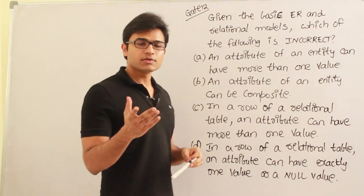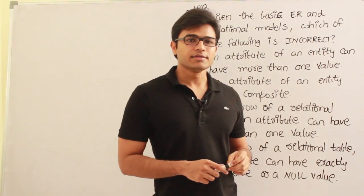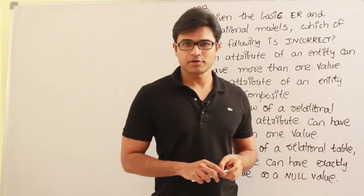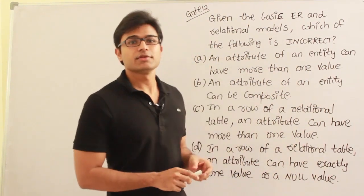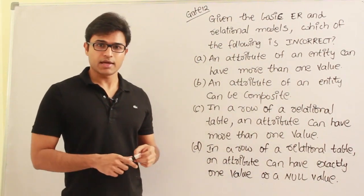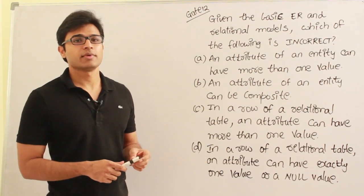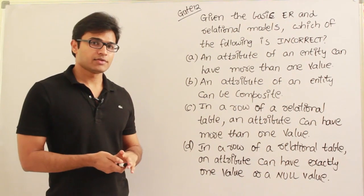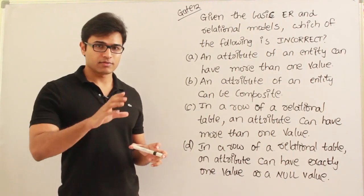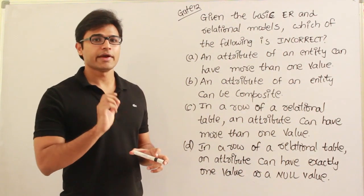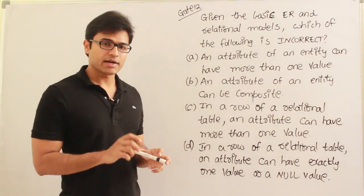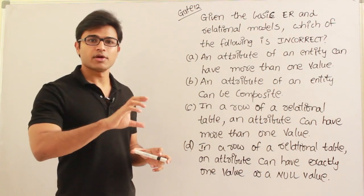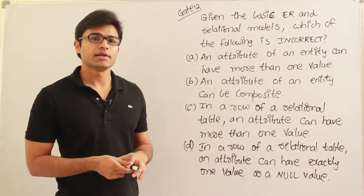In the ER model, multi-valued attributes are allowed. For example, a student can have many phone numbers, so phone number becomes a multi-valued attribute. However, in the relational model, only single-valued attributes are allowed — composite attributes are also not allowed. Whenever there is a multi-valued attribute, we create a separate table in the relational model.